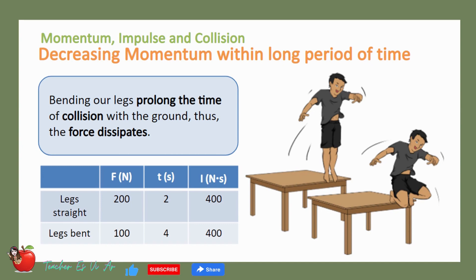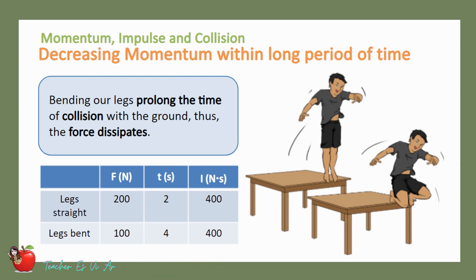For example, with legs straight you can reach the ground within 2 seconds experiencing a force of 200 newtons. On the other hand, with legs bent, the impulse is still the same, but you can reach the ground within 4 seconds experiencing only a force of 100 newtons.